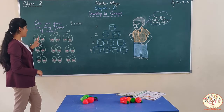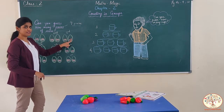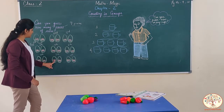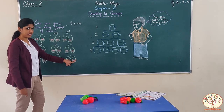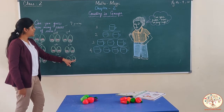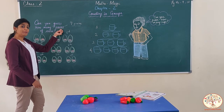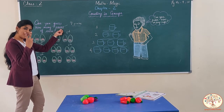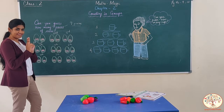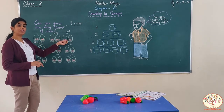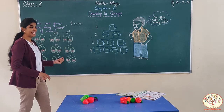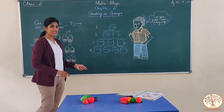Aap aise counting mat karna: 1, 2, 3, 4, 5, 6, 7, 8, 9, 10, 11, 12, 13, 14, 15, 16, 17, 18. That gives 18 individual items, but the question asks for pairs. Kyunki yahan pe pairs pooch raha hai — hamesha two things of same type ko ek pair maante hain. So: one pair, two pair, three pair, four, five, six, seven, eight, nine. Understood? Check out the question given on page number 9.